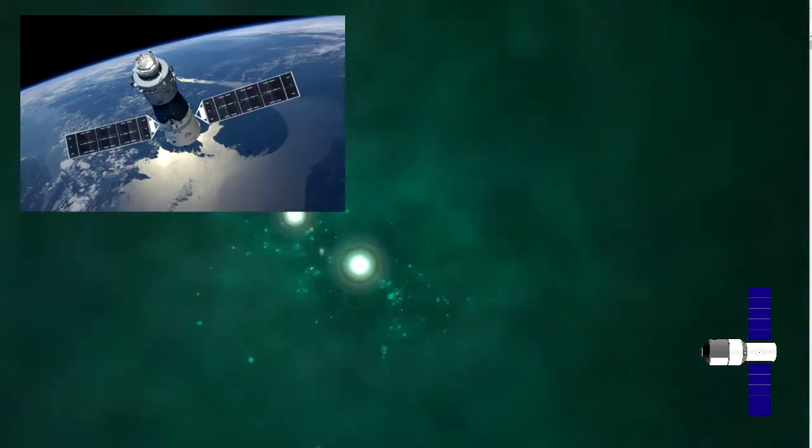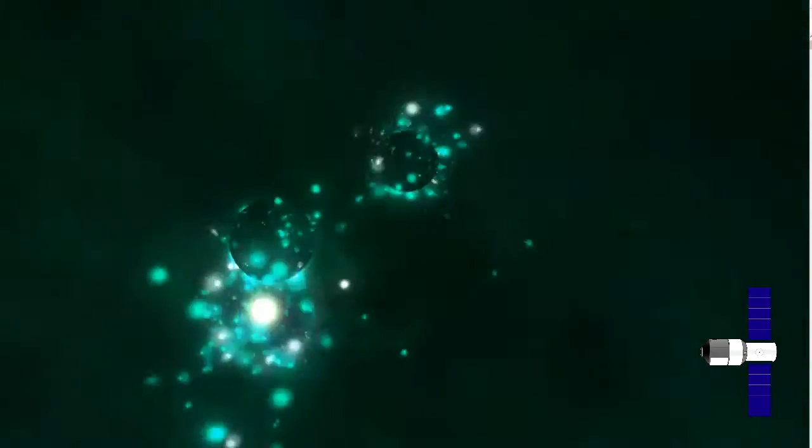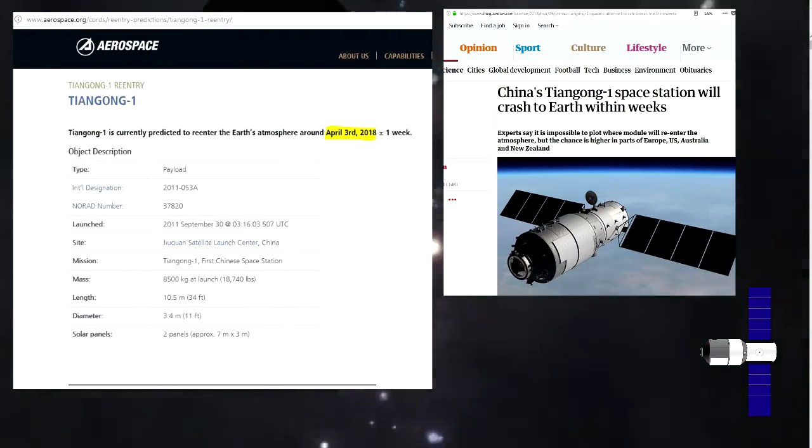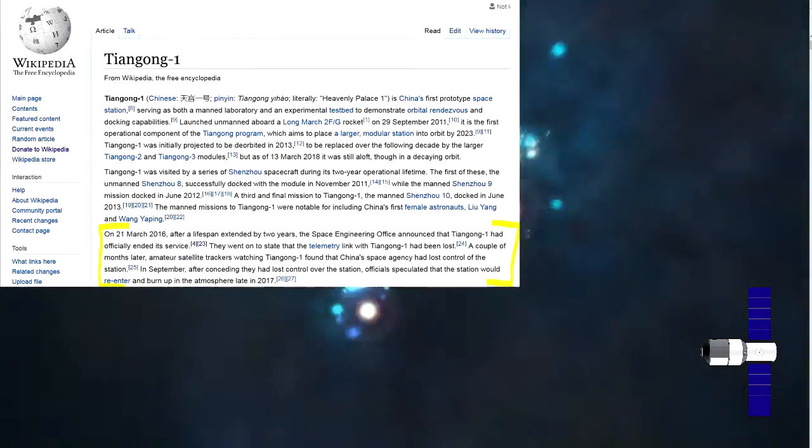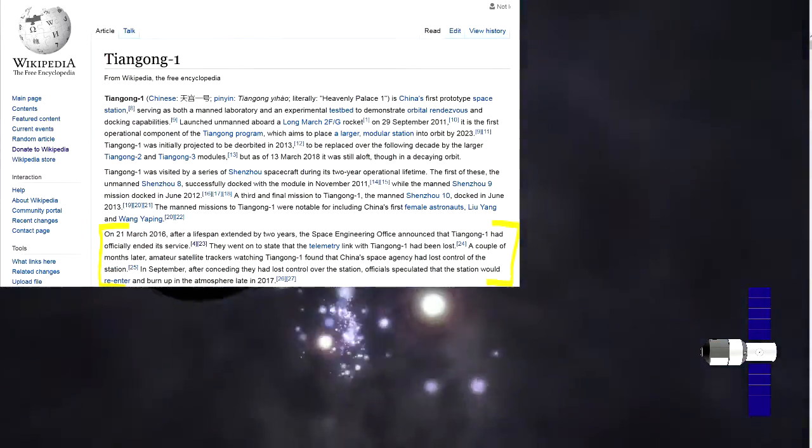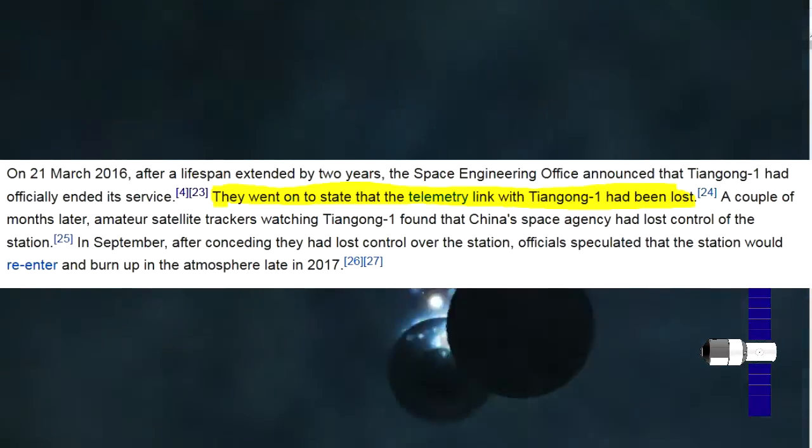China's first prototype space station, literally named Heavenly Palace-1, as you may know is slowly making its way back to Earth. But nobody exactly knows where or when it's going to enter the atmosphere. On March 21, 2016, the Tiangong-1 had officially ended its service, mostly because they had lost the uplink with it.